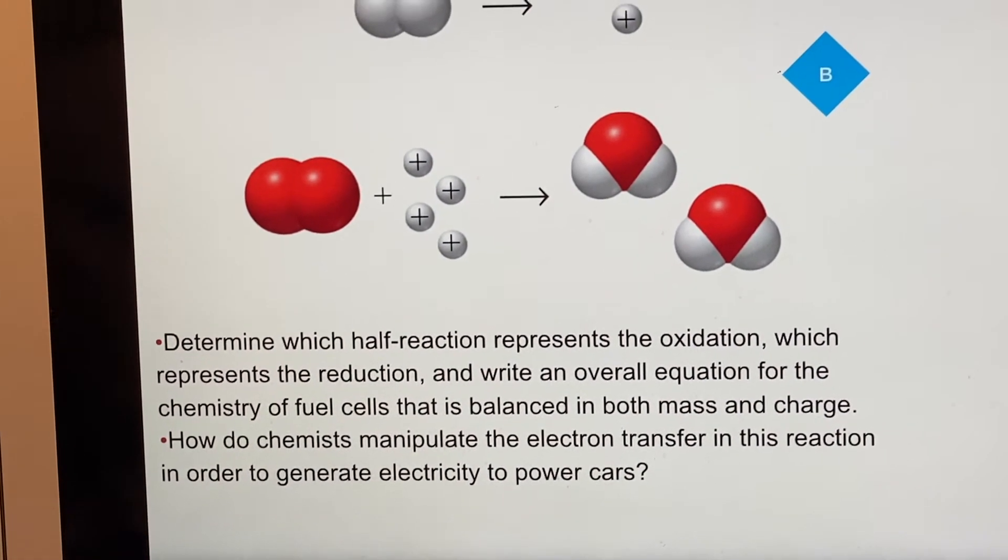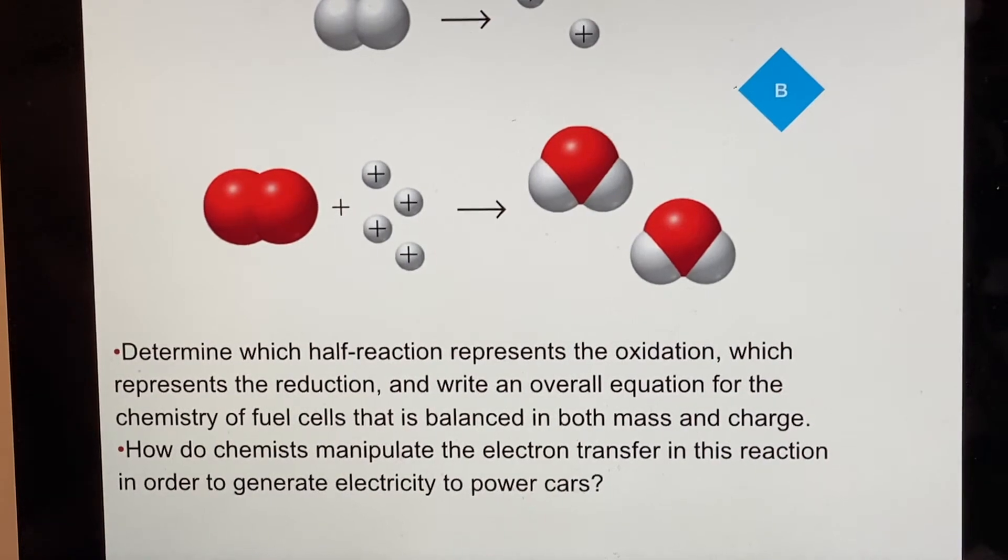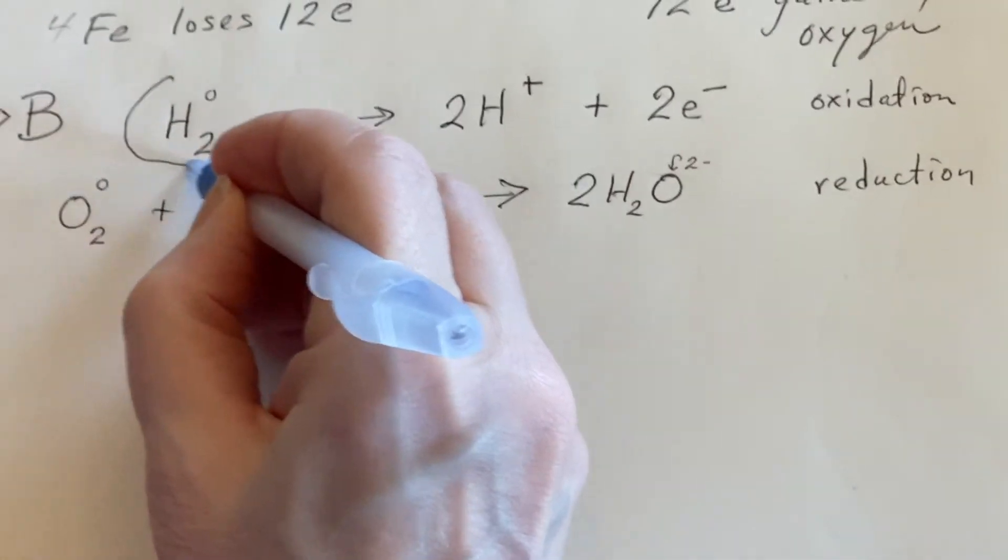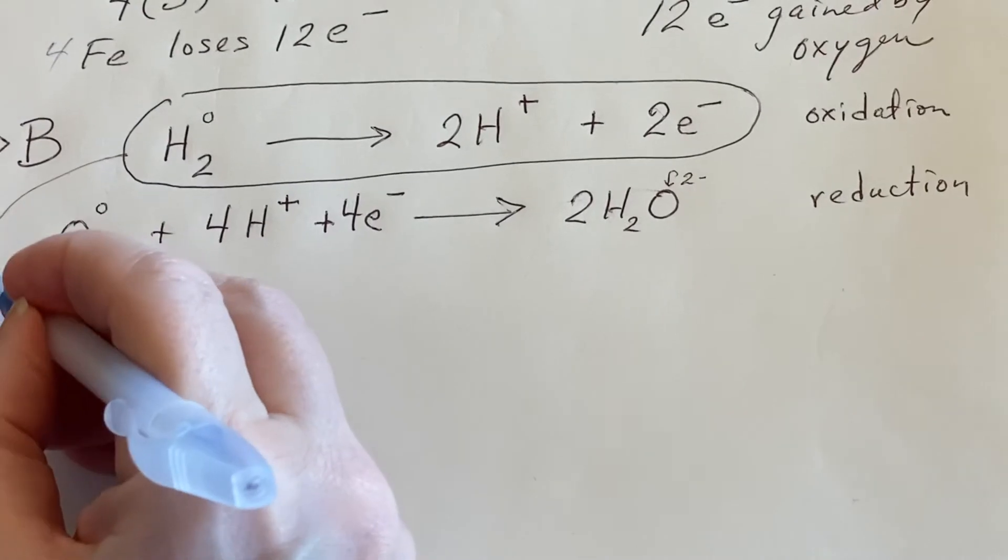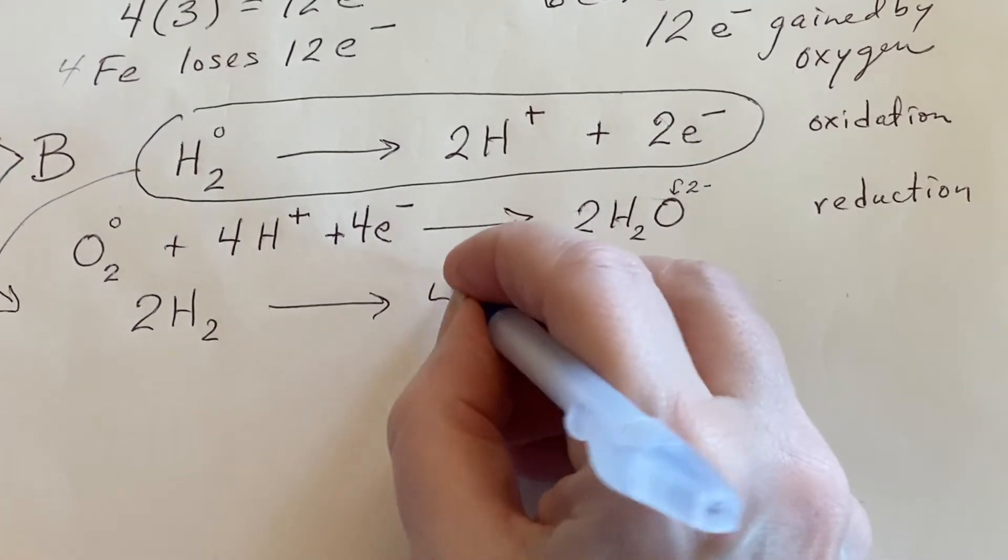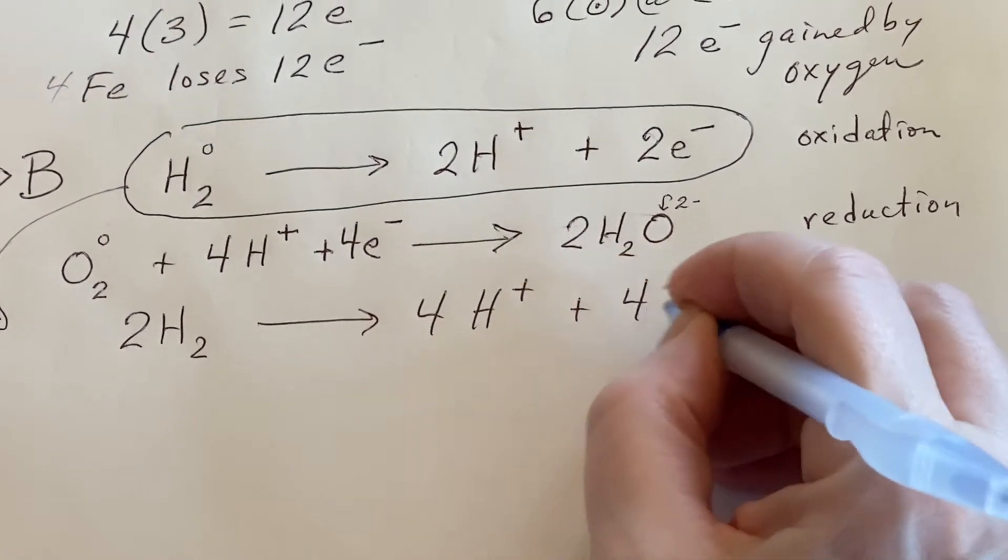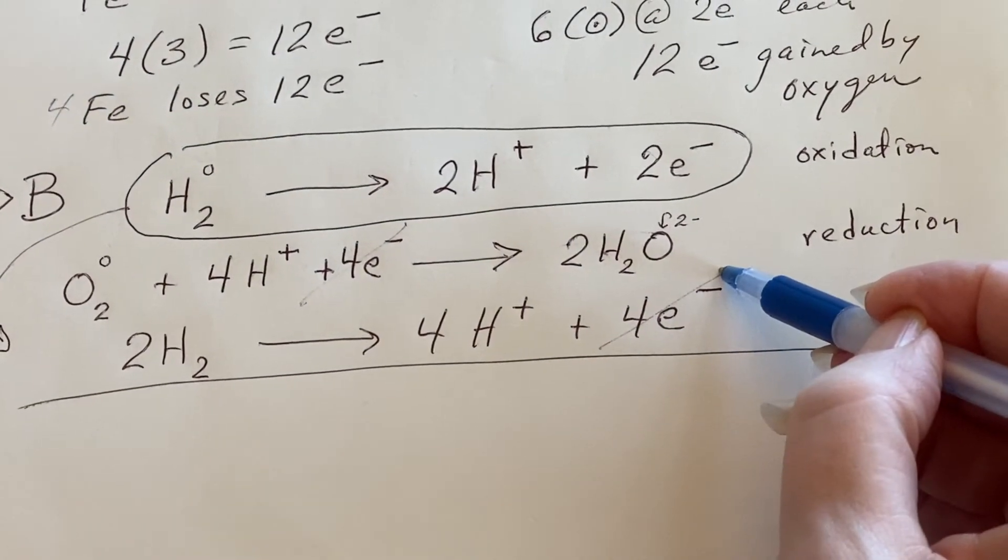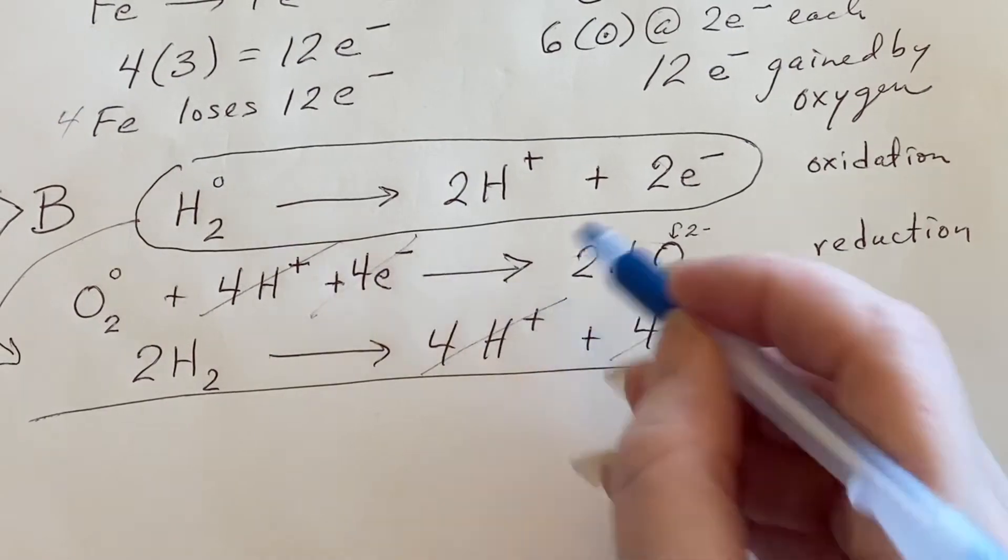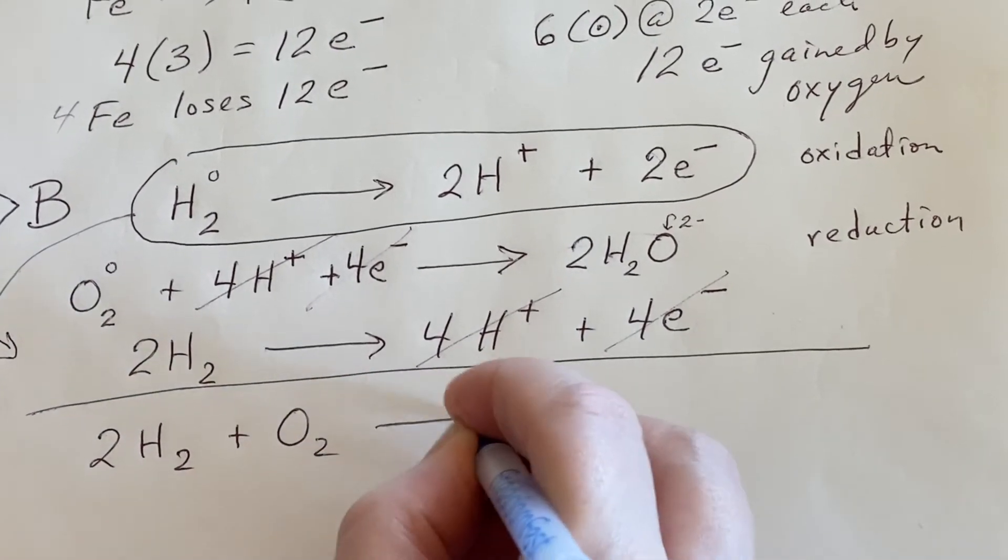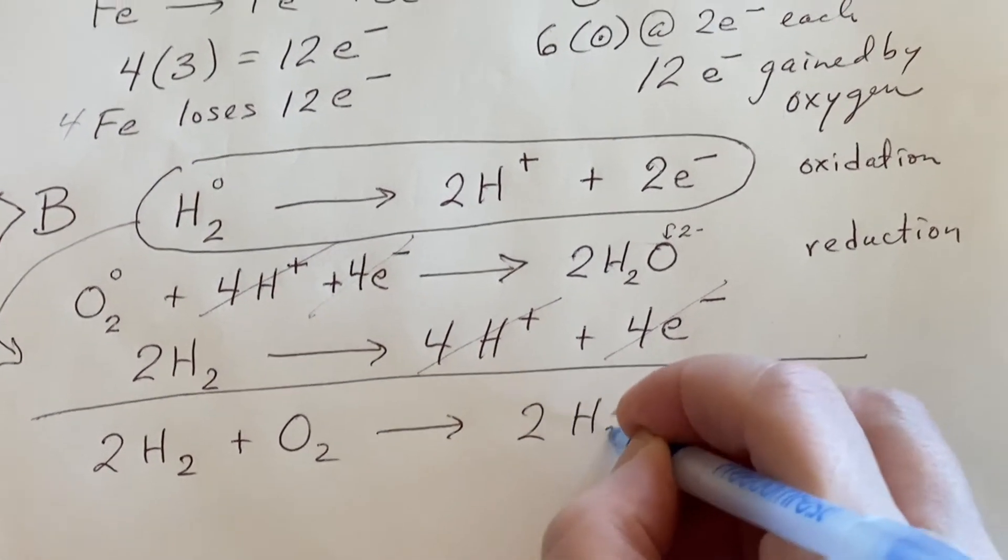They now want an overall equation, so I should add these together. But if I just add them together the way they are, things aren't going to cancel out. So what I'm going to do is take this whole thing and multiply it by two. That would be two H2 and four protons and four electrons. When I do that and add them together, I can cancel out the electrons on the left and the right, and cancel out the protons. I end up with something I already knew how to make: water.